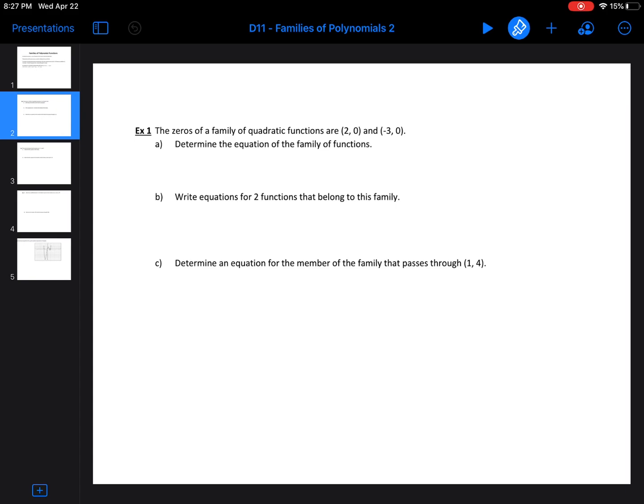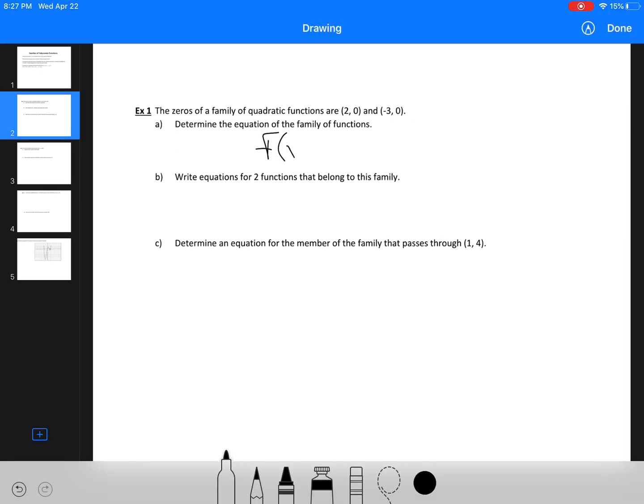We've got the zeros of the family of quadratics are (2, 0) and (-3, 0). So to determine the equation, we're just going to have f(x) equals, and we're going to use k as our starting value here. This would be x minus 2 and x plus 3. So our solutions would be 2 and negative 3.